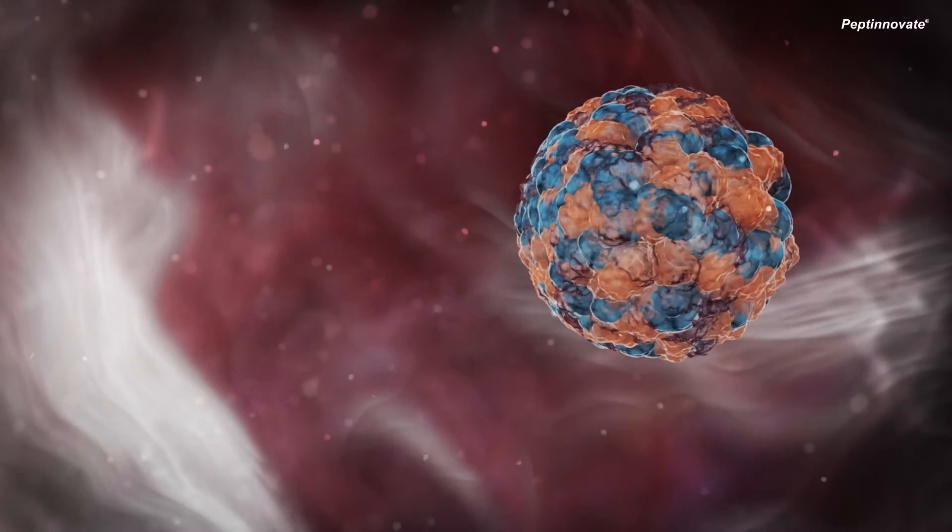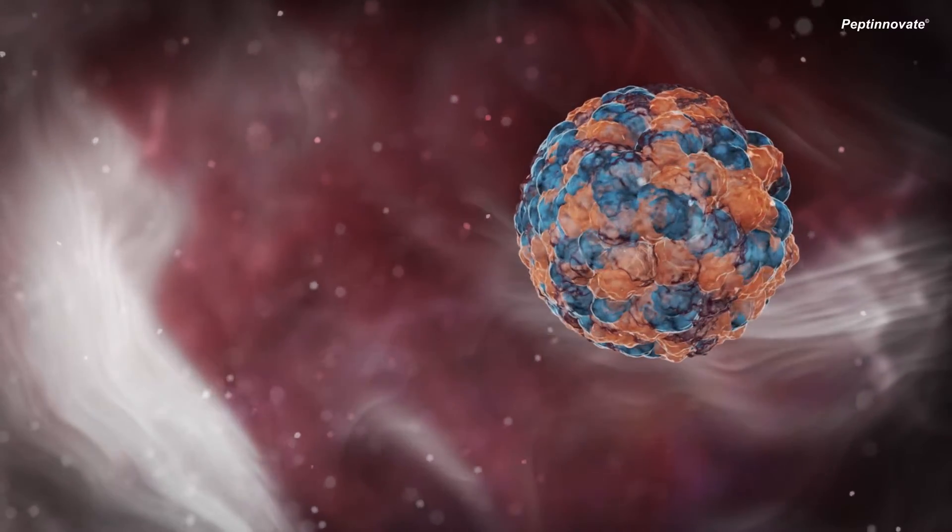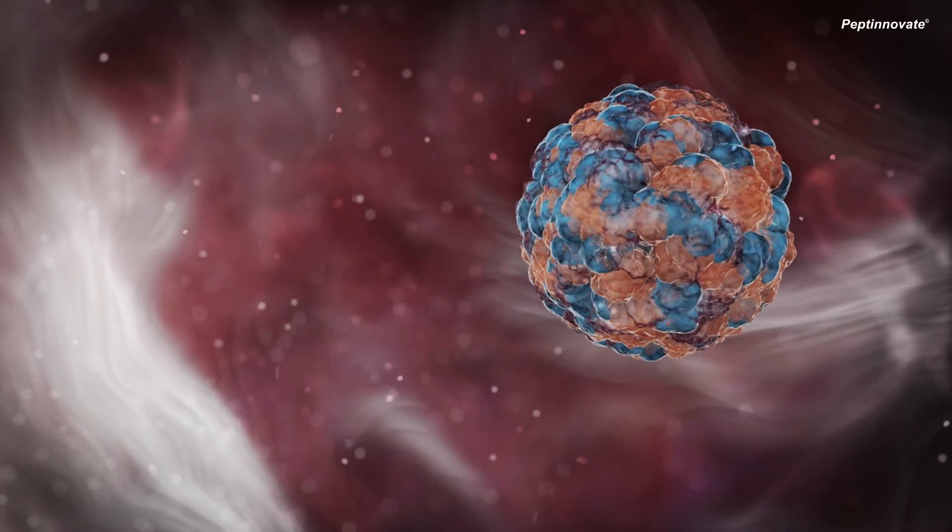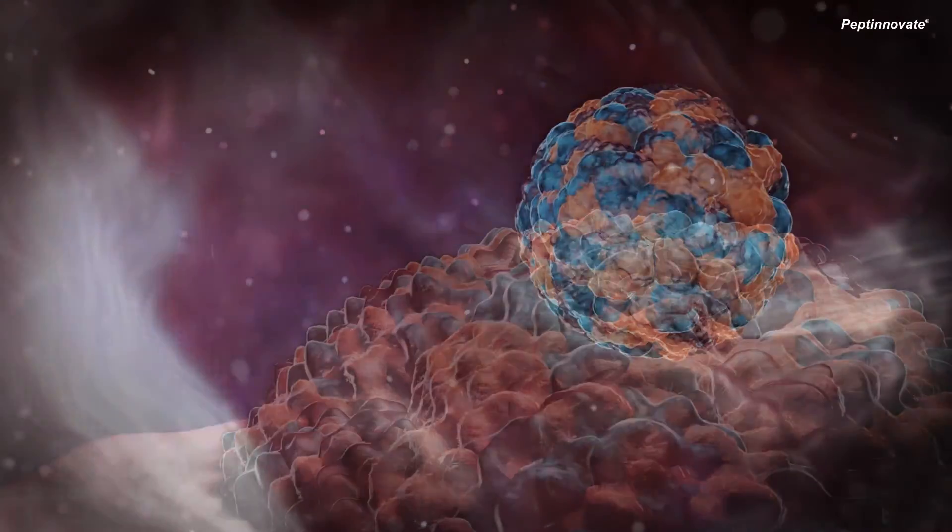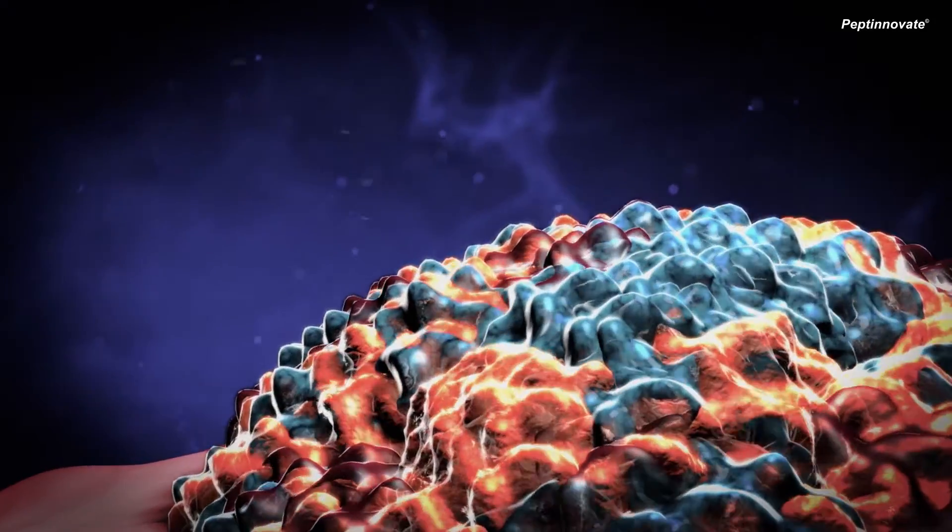These cells are attracted to the macrophage and freeze around it to form a spherical granuloma, shielding the human host from the bacteria and the bacteria from the human's immune system.